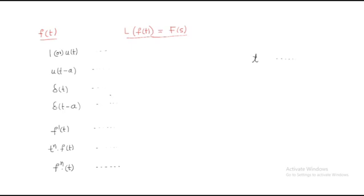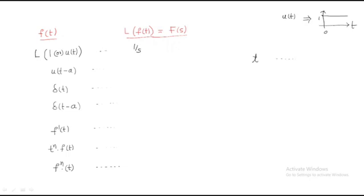We will now discuss some direct conversion formulas for the Laplace transform. The first formula is the Laplace transform of 1 or u(t) — both are the same, because u(t) equals 1 for all time t ≥ 0. When we apply the Laplace transform to this function, we get 1/s. So L{1} = L{u(t)} = 1/s.